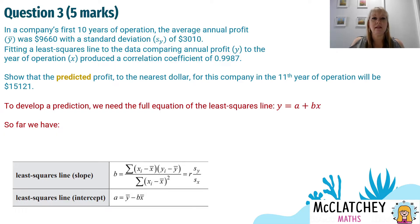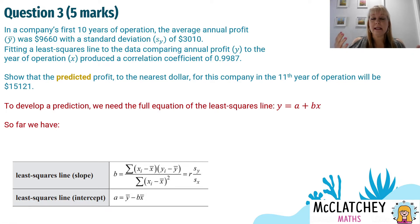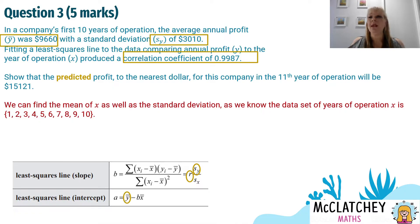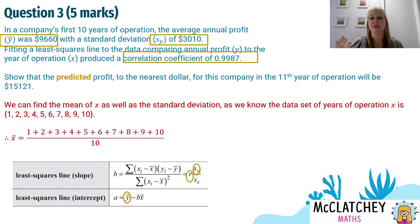We've got some information here. They've given us the mean of Y, the standard deviation of Y, and R, our correlation coefficient. The question is: if you don't know what SX is, and you don't know what the mean of X is, how do you work this out? We can actually find the mean of X as well as the standard deviation, because we know the data set for years of operation X. This isn't super tricky, but a lot of people would stop here and say, 'I don't know what X is.'